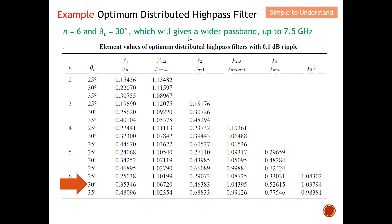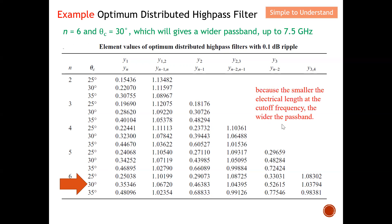If I choose to use the 30-degree value, this will give a wider passband — for instance the passband might extend to around 7.5 GHz. If I use 35 degrees, the passband might be narrower, perhaps up to around 6 GHz. The question targets 6.5 GHz, which is in between. In short, the larger the electrical length, the shorter the passband; the smaller the electrical length, the wider the passband. Whether a wider or narrower passband is desired depends on your design requirements.